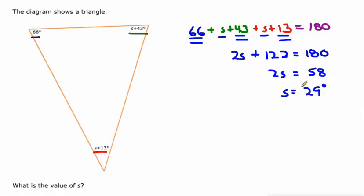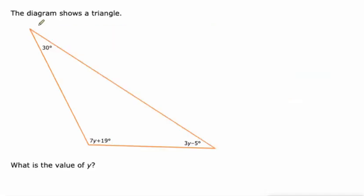That's the value of s. So this angle down here, this red one, would be 29 plus 13. The green one would be 29 plus 43, and the blue one would be 66.